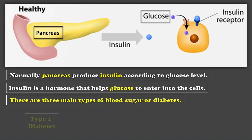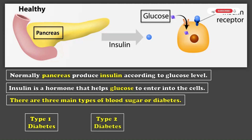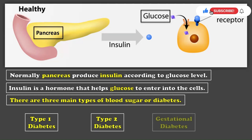There are three main types of diabetes through which sugar affects the human body. The first is type 1 diabetes, the second is type 2 diabetes, and the third is gestational diabetes.